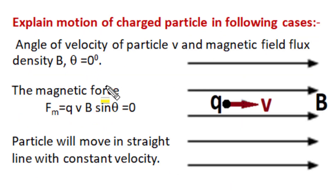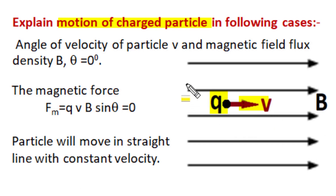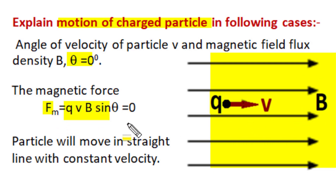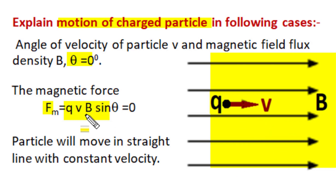The next two examples explain motion of a charge particle in magnetic field under all conditions. In the first case, the charge particle moves with velocity v along the direction of the magnetic field, so the angle between velocity and magnetic field flux density is 0 degrees. The magnetic force qvB sin theta becomes 0 since sin 0° = 0, and the particle moves in a straight linear direction with constant velocity. This also applies when the angle is 180 degrees — the force is again 0 and the particle moves in a straight linear direction with constant velocity.